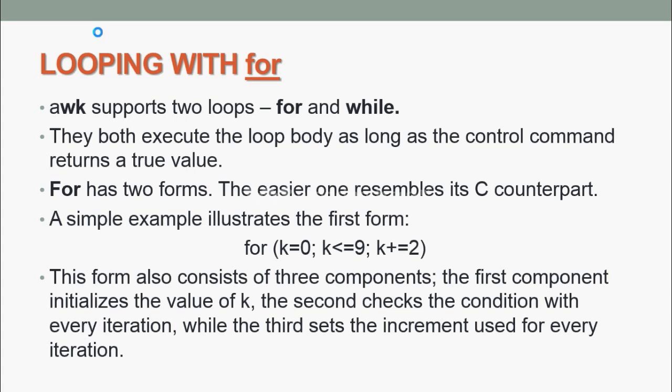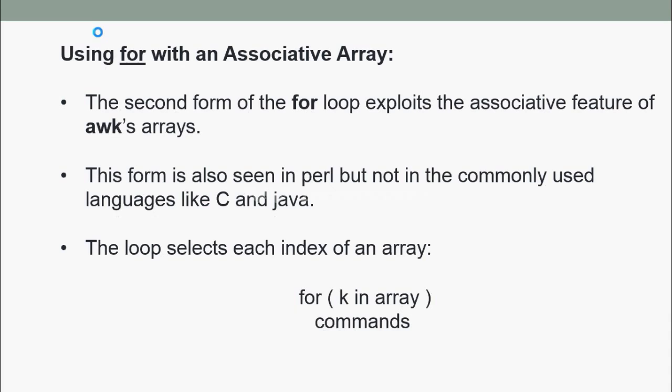Using for with an associative array: The second form of the for loop exploits the associative feature of AWK arrays. This form is also seen in Perl but not in commonly used languages like C and Java. The loop selects each index of an array. Syntax is: for (k in array) {commands}.